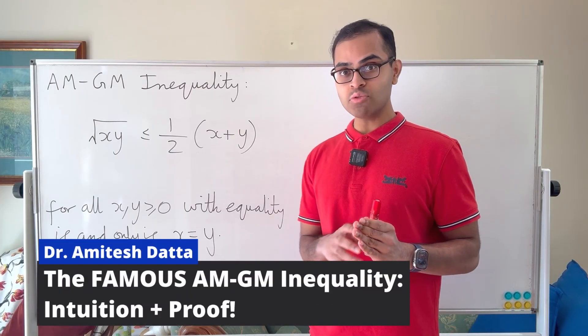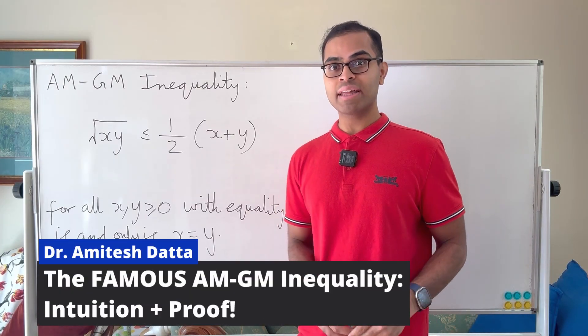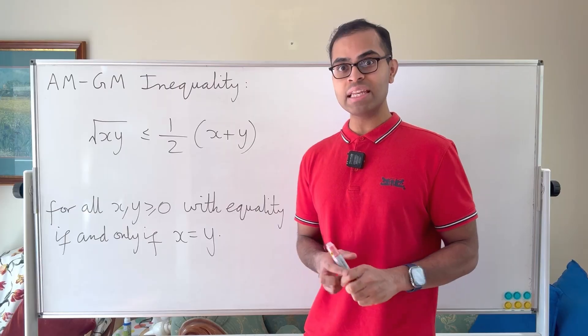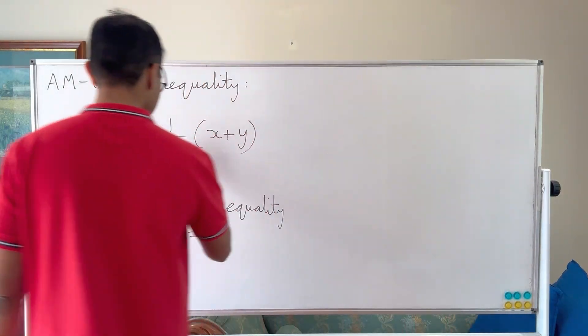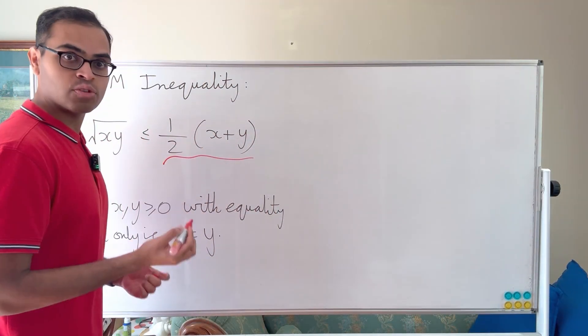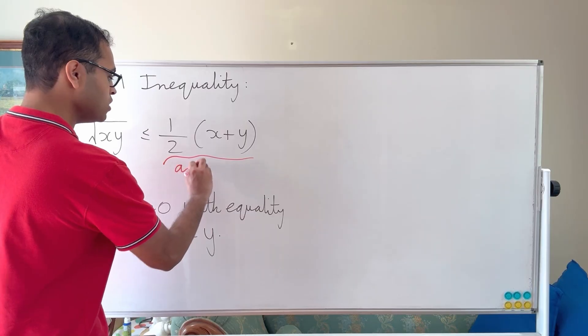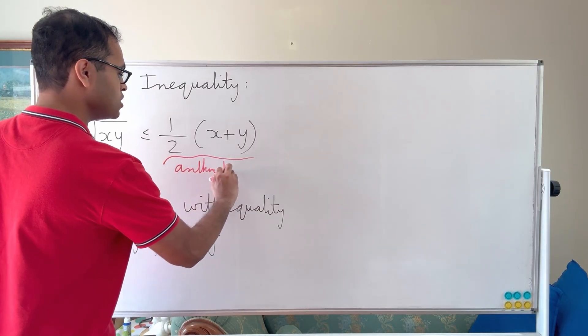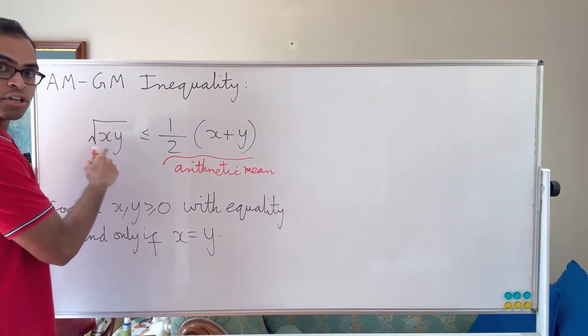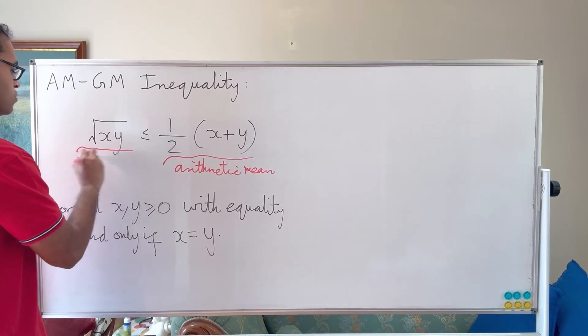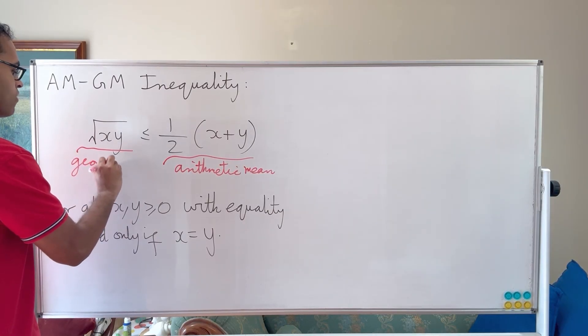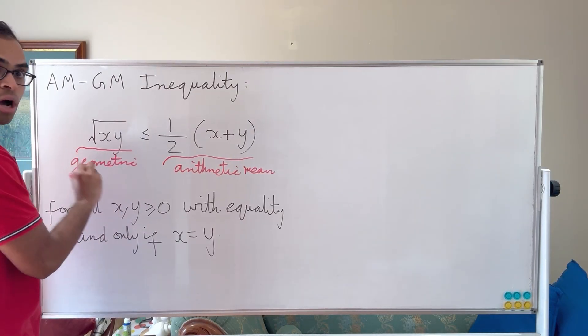The AM-GM inequality is one of the most important inequalities in mathematics between the arithmetic mean and the geometric mean. Here we have two non-negative numbers x and y, and this is the arithmetic mean between the two numbers, which is the usual mean we know. This is the geometric mean between the two numbers, which is the square root of xy. I'll explain where the geometry comes from.